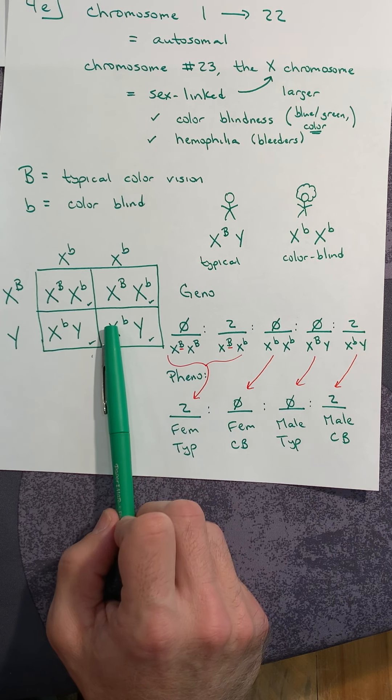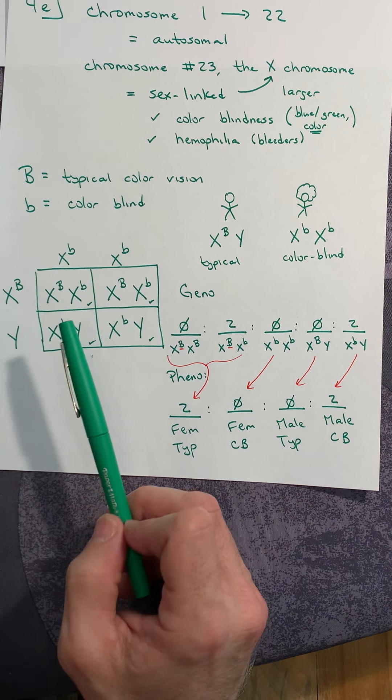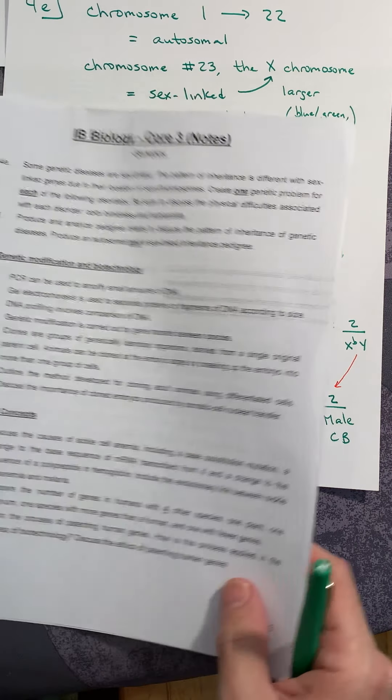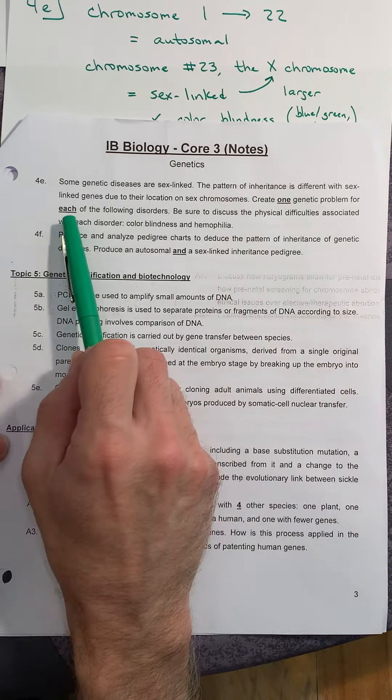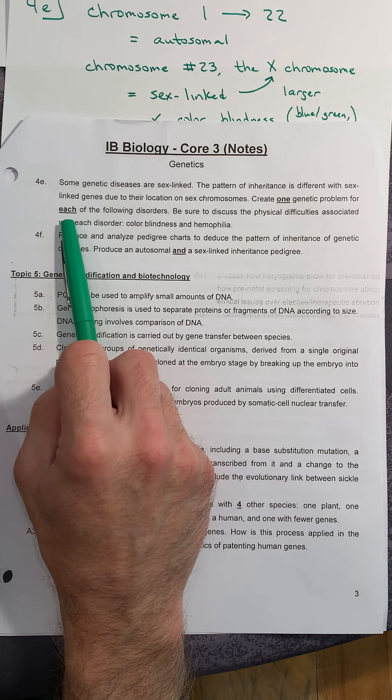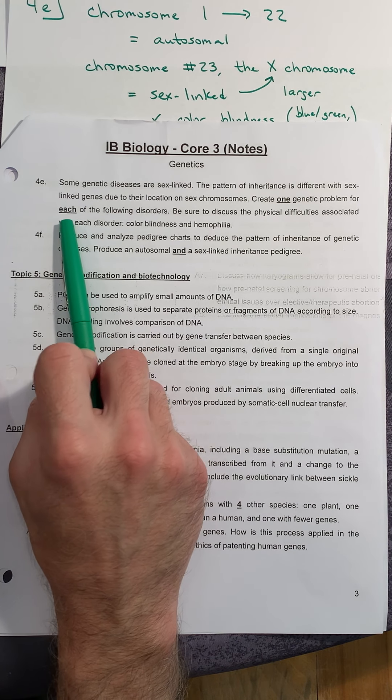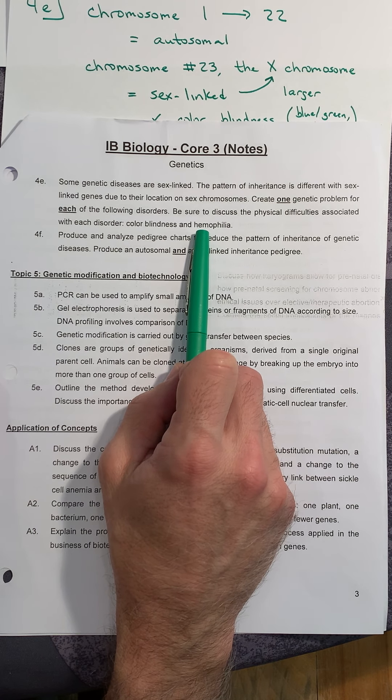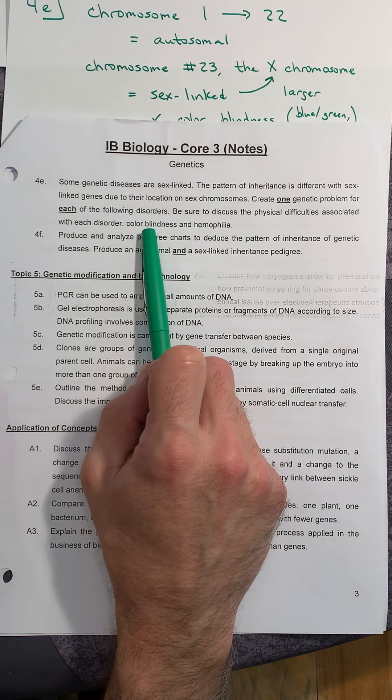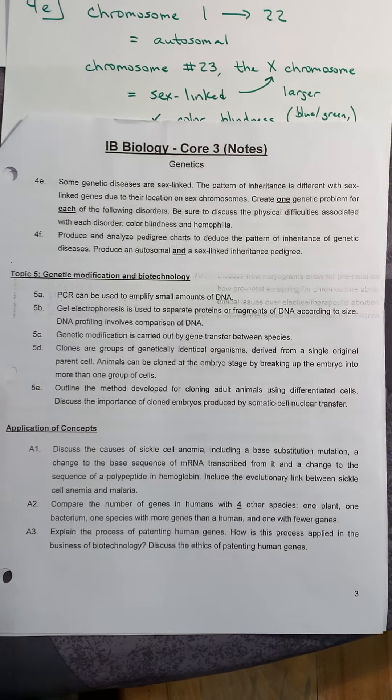On 4e, you need to sit down and create—it says create one genetic problem for each of the disorders. Which disorders are we talking about? Color blindness and hemophilia. For 4e, you're writing two questions: one for color blindness and one for hemophilia. Have fun.